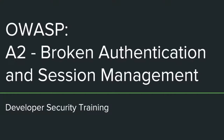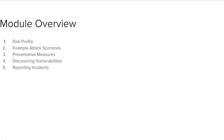This training module covers OWASP A2 Broken Authentication and Session Management. This module is divided into five sections: Risk Profile, Example Attack Scenarios, Preventative Measures, Discovering Vulnerabilities, and Reporting Incidents.